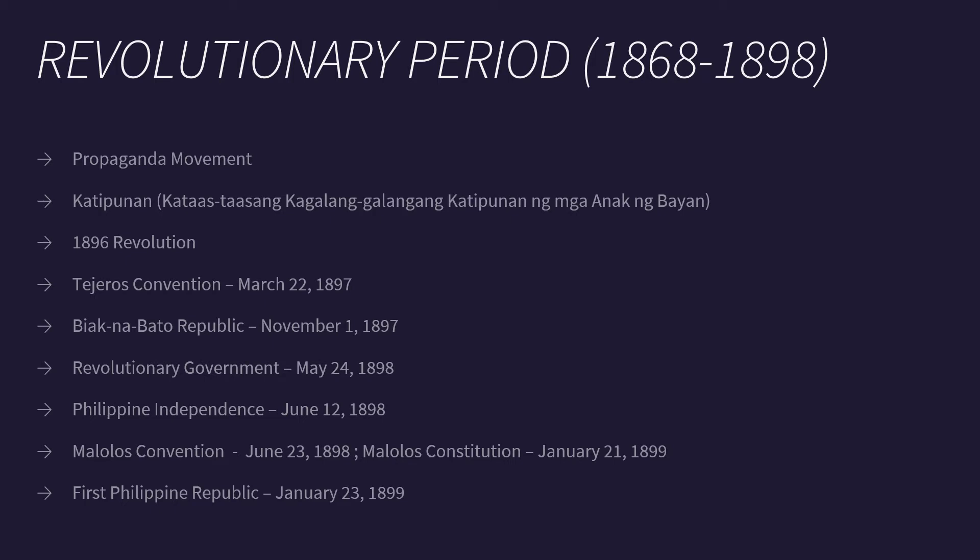Emilio Aguinaldo created the Biak-na-Bato Republic on November 1, 1897, which was short-lived because they made a deal with the Spanish government — they would be exiled in Hong Kong in exchange for concessions for the revolutionaries. Aguinaldo and his men returned from Hong Kong on May 24, 1898, and started a revolutionary government. They declared Philippine independence on June 12, 1898. The Malolos Convention was called on June 23, 1898 to create a constitution. The Malolos Constitution was ratified on January 21, 1899, and the First Philippine Republic was formally declared on January 23, 1899.